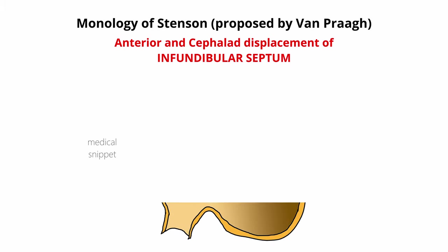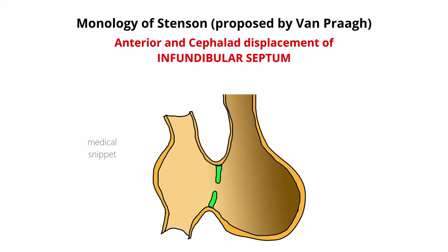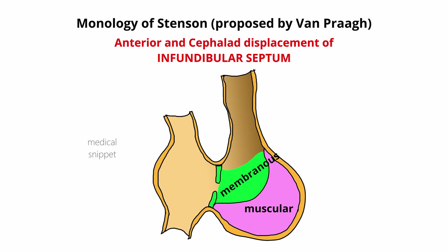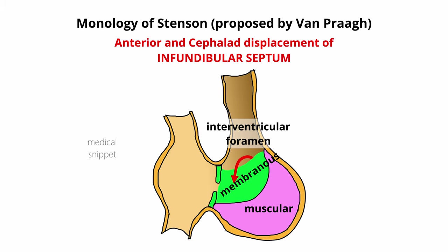For the ease of understanding, let's recap the development quickly. The ventricular septum develops as three parts: muscular, membranous, and the infundibular. The space above the membranous septum is called the interventricular foramen, and it is closed by the development of the infundibular septum.